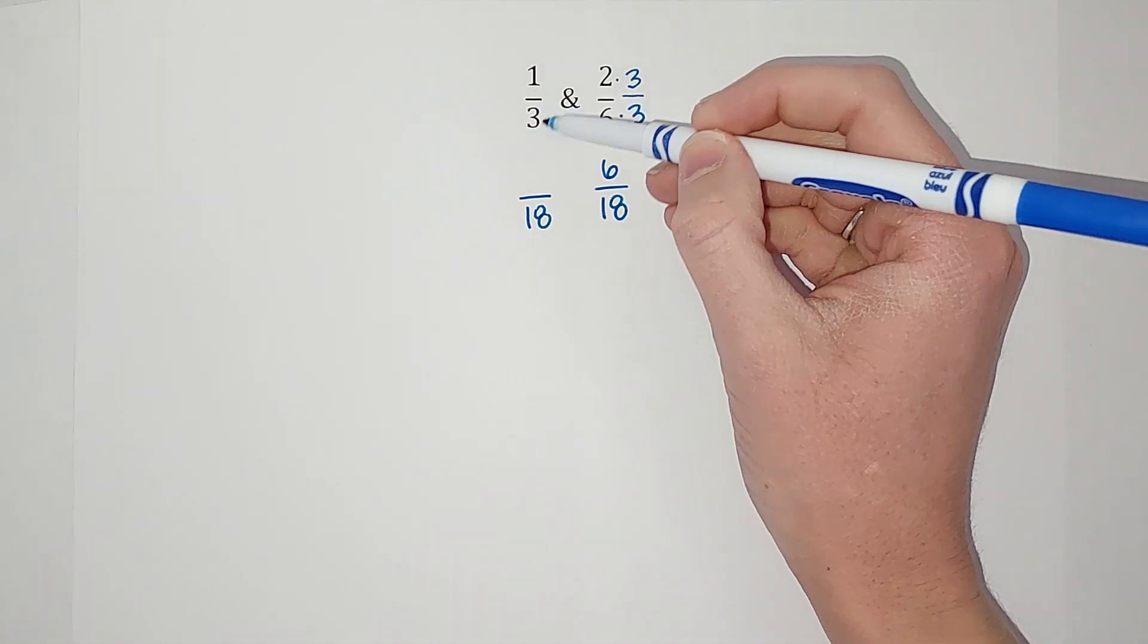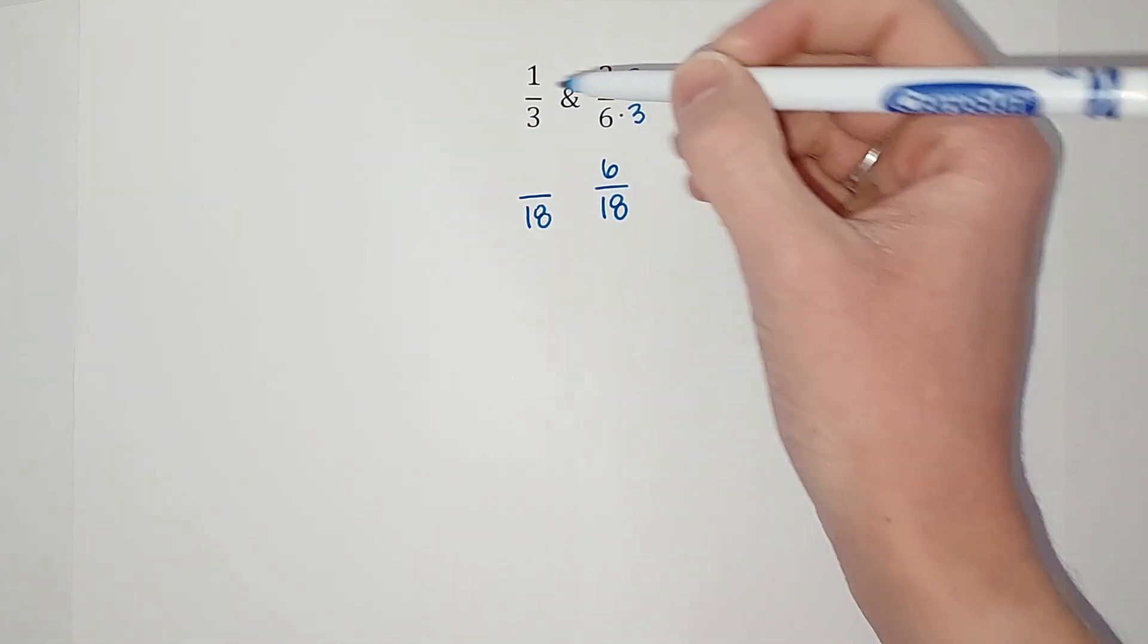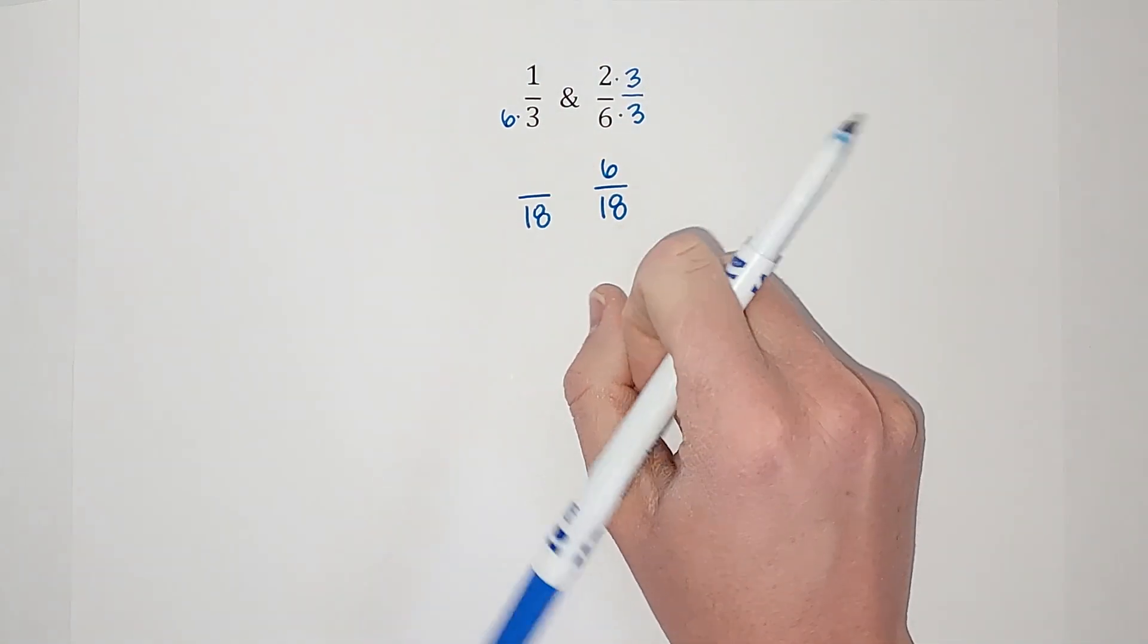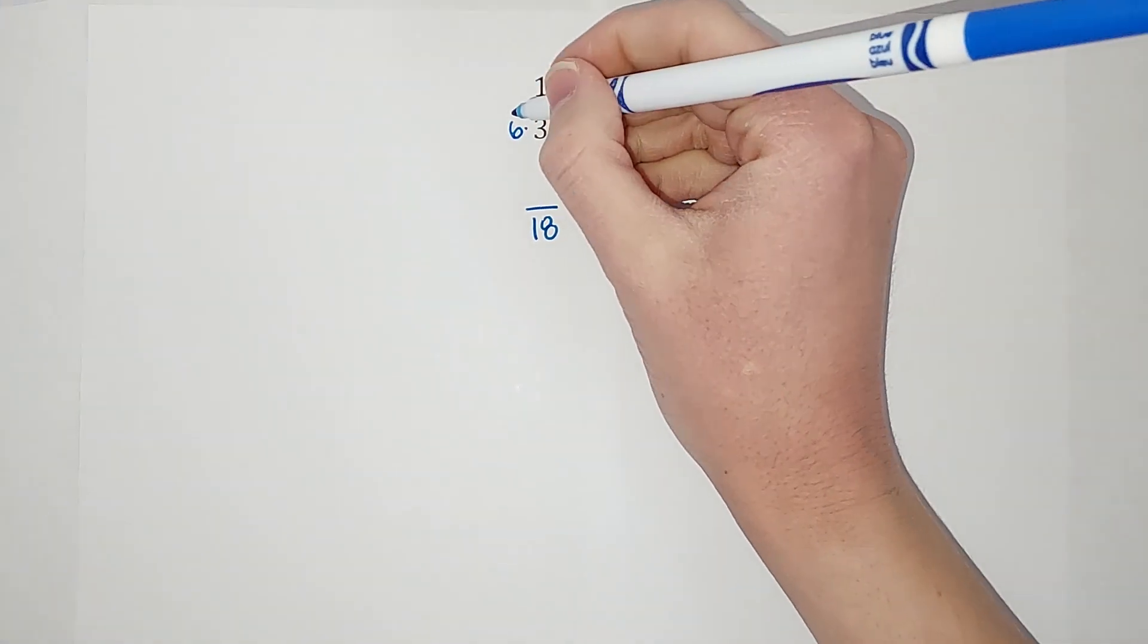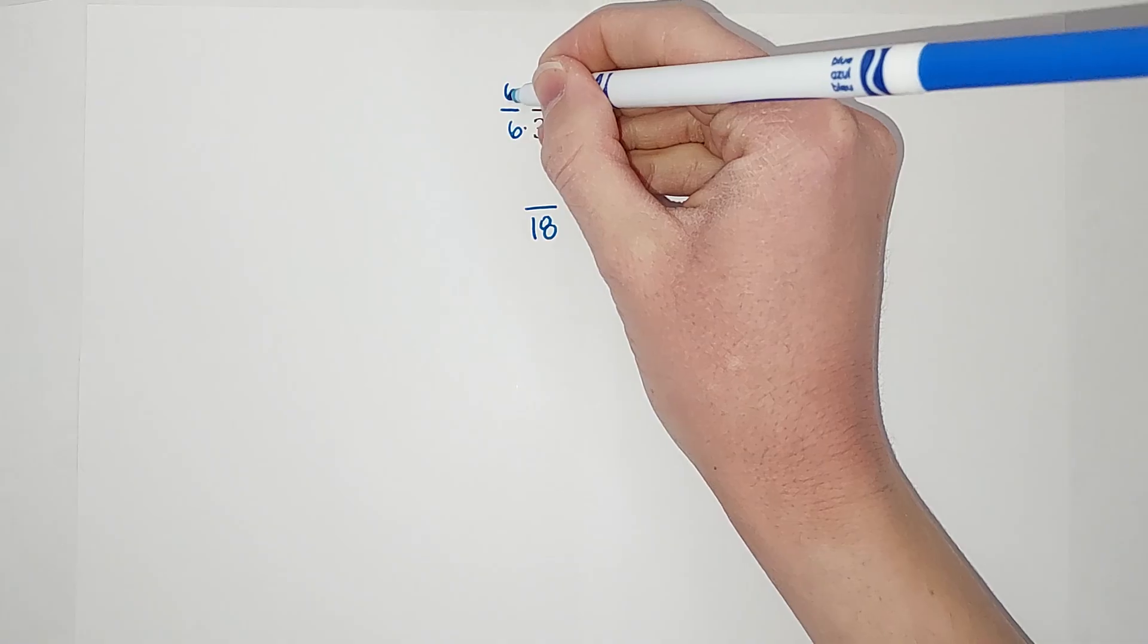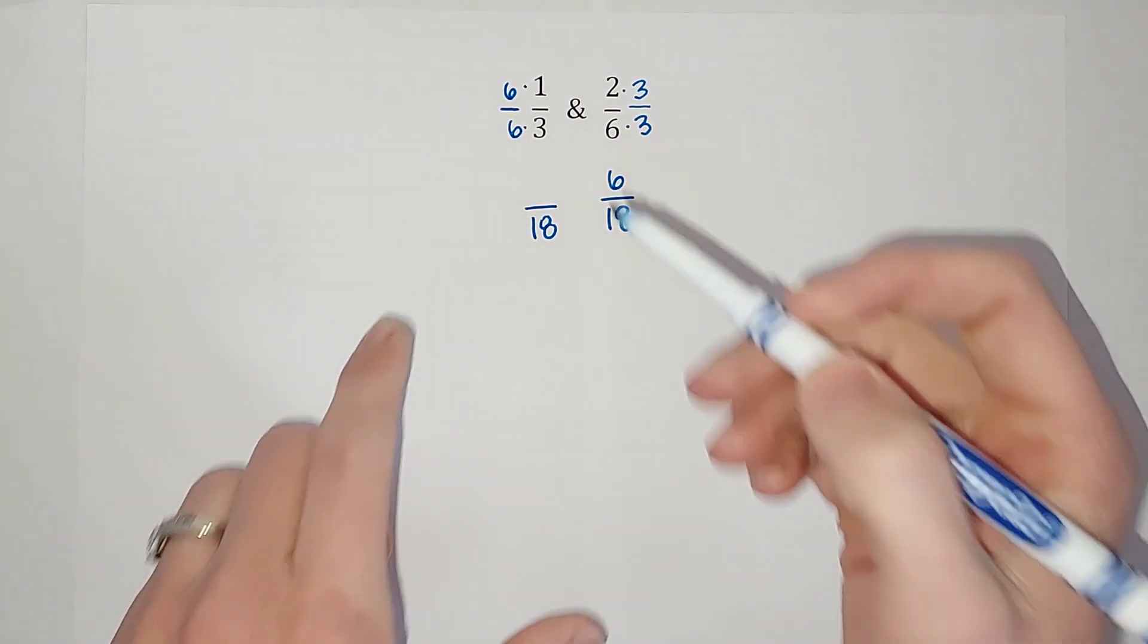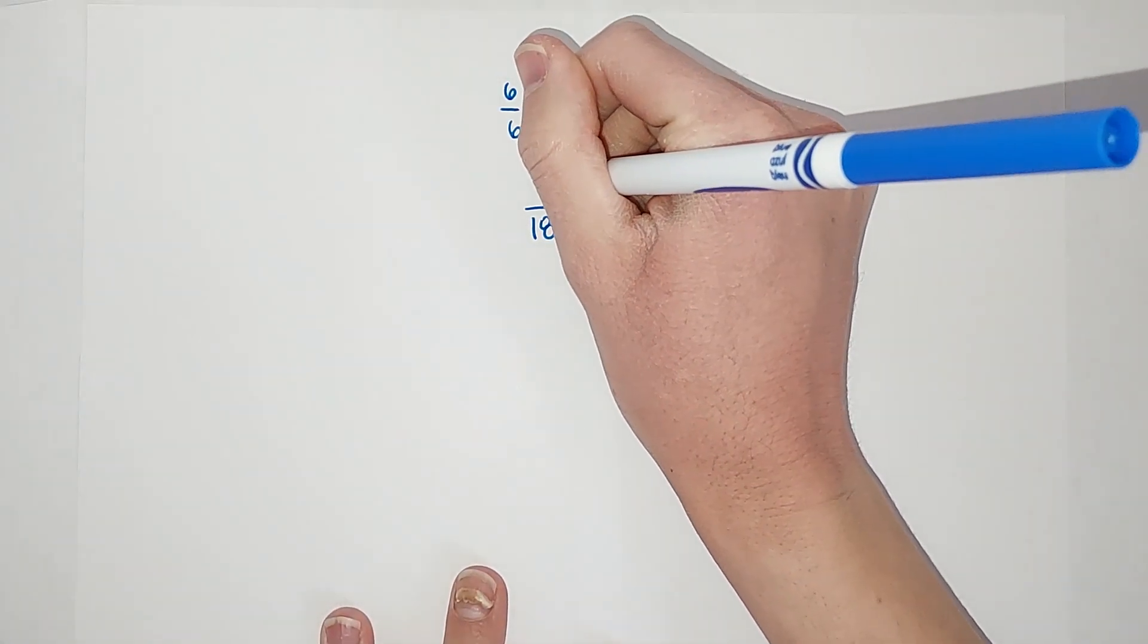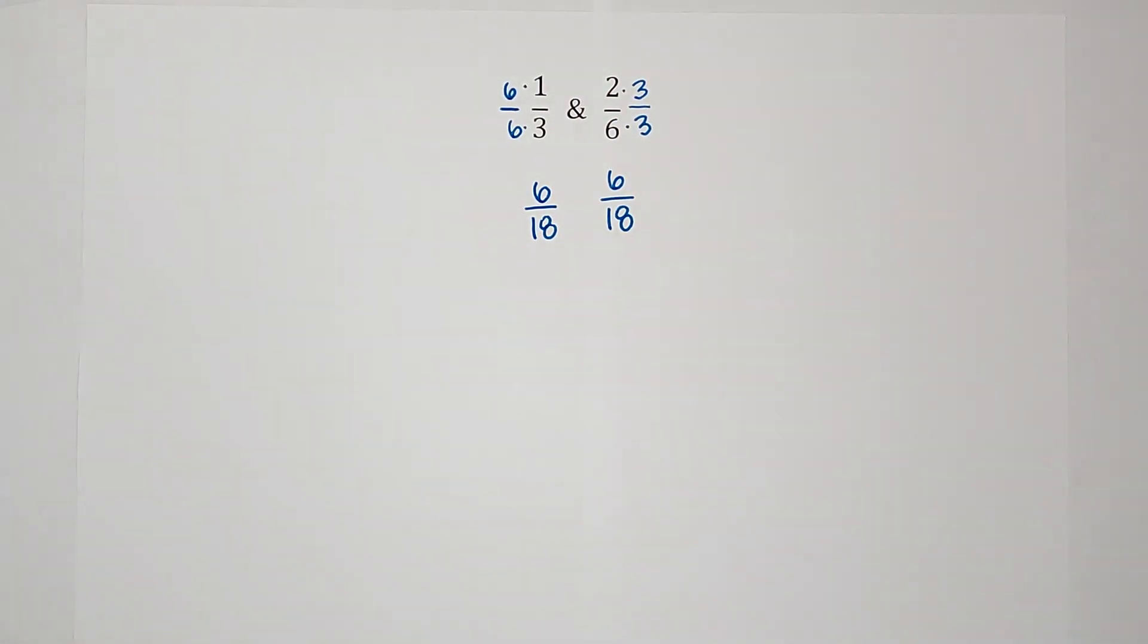Now to get this one to be 18, I'm going to multiply it by six over six because that's just one. Six times three gives me that 18, six times one gives me that six.